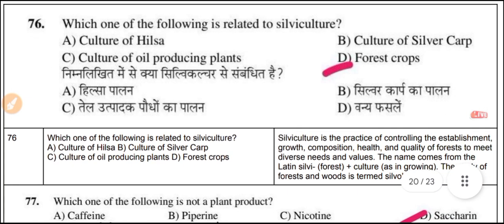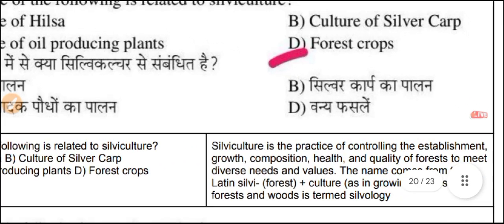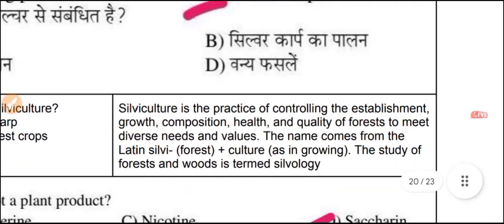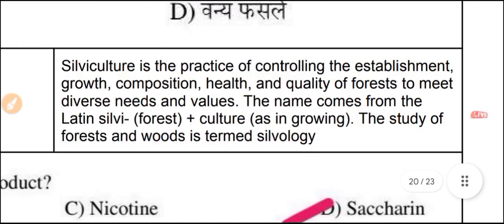Question 76: Which of the following is related to silviculture? Silviculture relates to forest crops. Silviculture is the practice of controlling the establishment, growth, composition, health, and quality of forests to meet diverse needs and values. The name comes from the Latin 'silva' meaning forest.